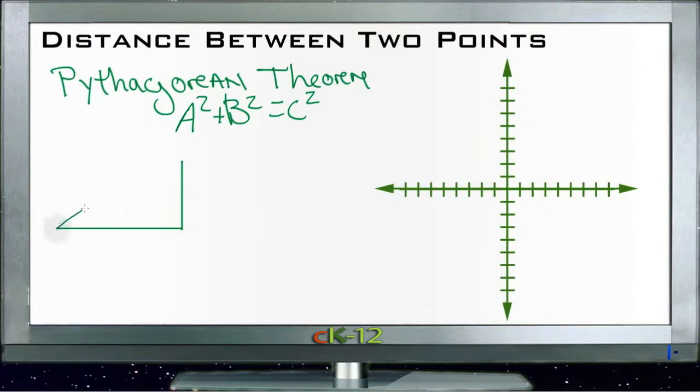If we take a look at a right triangle, by convention we label the shortest side a, the medium side b, and the longest side c. So if we have two sides, let's say this one is 3 and this one is 4.